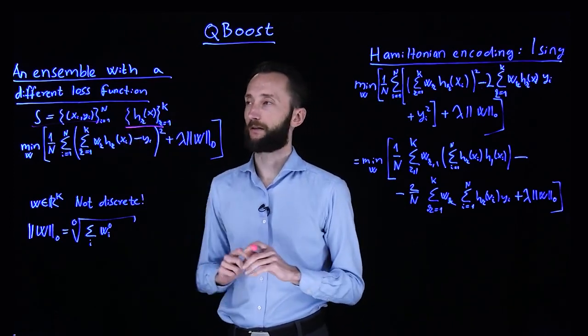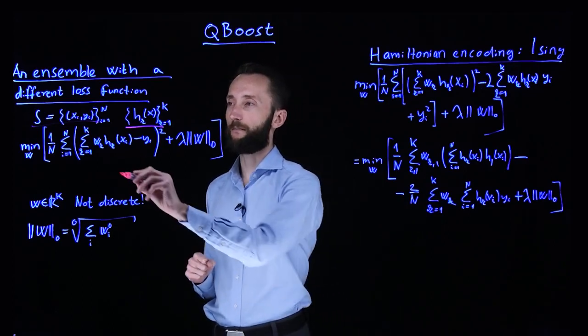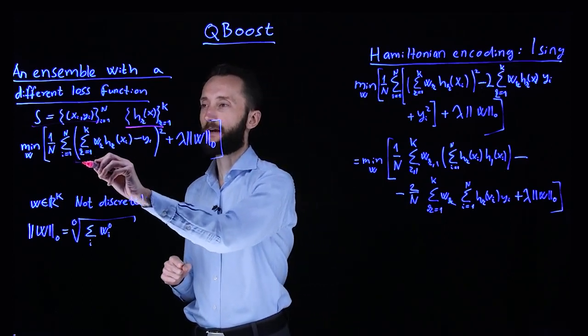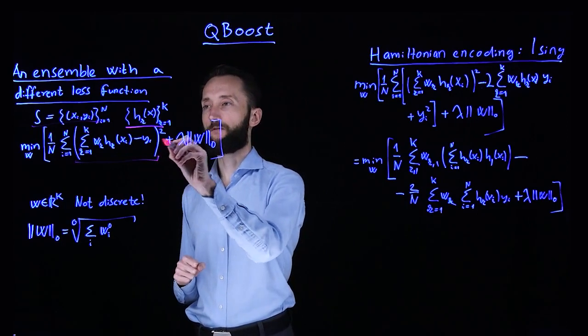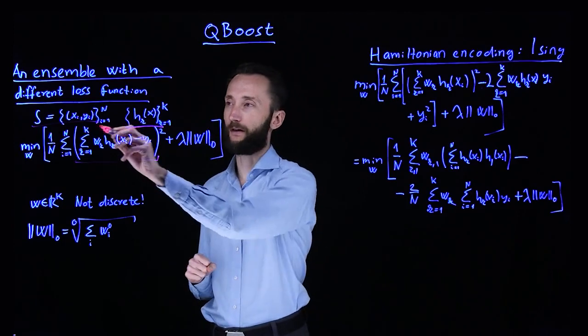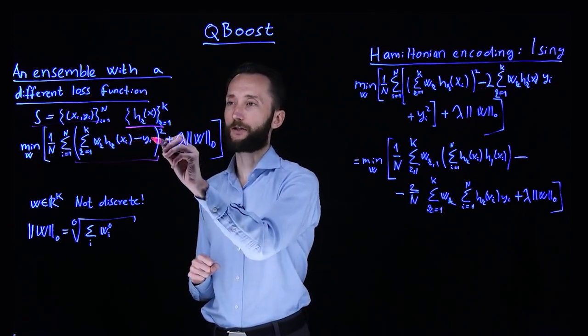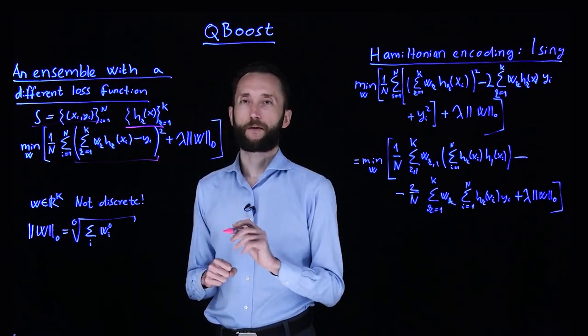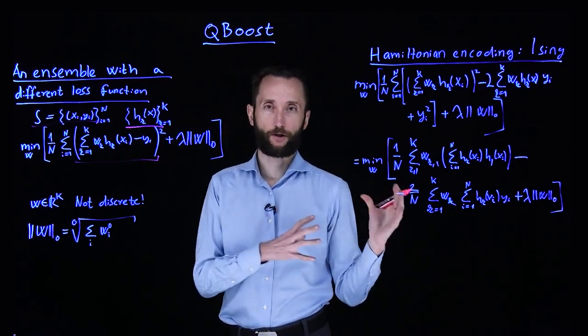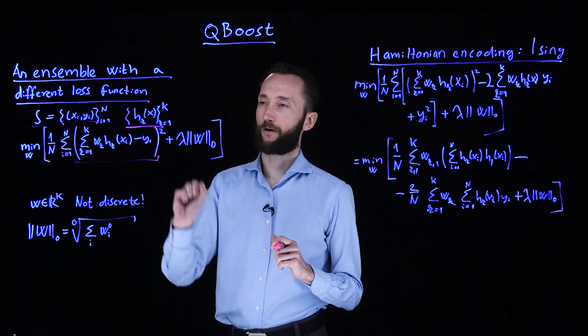And we have capital K of them. So now what we do is we measure the square loss between the prediction of the ensemble, which combines the individual models, and the actual label yi. So this contrasts with the exponential loss that we talked about in AdaBoost.